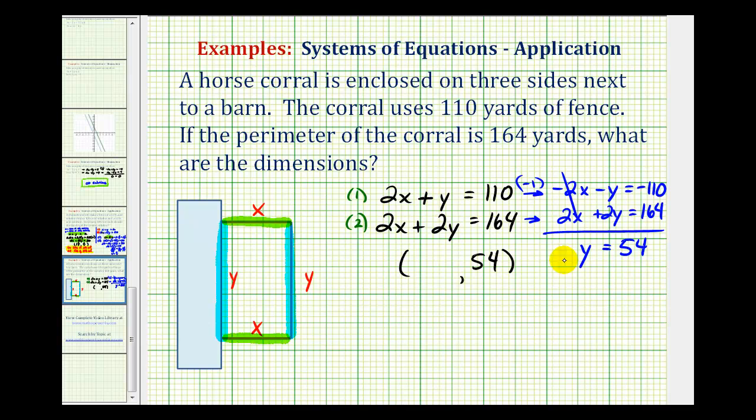Let's go ahead and use equation 1 to determine the value of x. So we'll substitute 54 for y, so we'll have 2x plus 54 equals 110. Subtract 54 on both sides. That'll give us 2x equals 56. Divide both sides by 2. We have x equals 28.